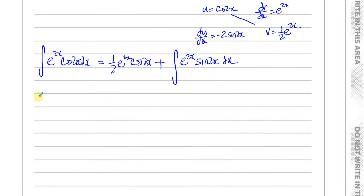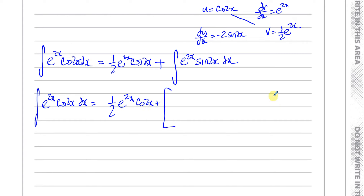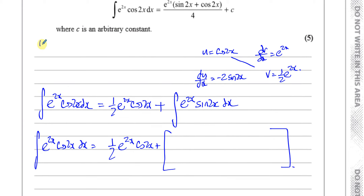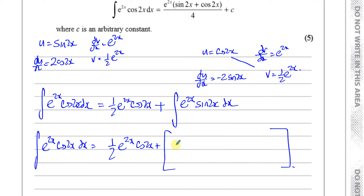Continuing and keeping the original integral written down: integral of e^(2x)cos(2x) dx = (1/2)e^(2x)cos(2x) plus... now I integrate e^(2x)sin(2x) by parts. Using u = sin(2x) and dv/dx = e^(2x): du/dx = 2cos(2x), v = (1/2)e^(2x). This gives sin(2x)·(1/2)e^(2x) = (1/2)e^(2x)sin(2x), minus the integral of (1/2)×2 × e^(2x)cos(2x) dx, which is the integral of e^(2x)cos(2x) dx.